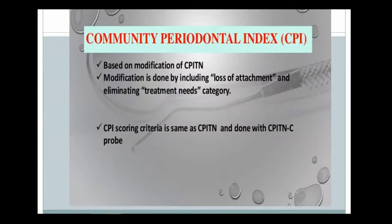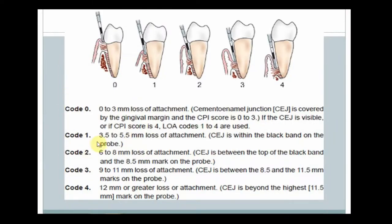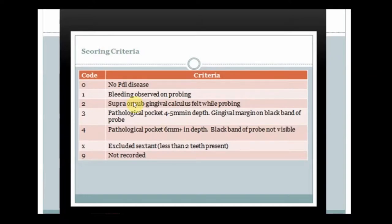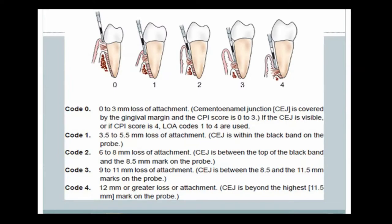For the CPI loss of attachment codes, everything else — procedure, index teeth, replacements — remains the same as CPITN, but instead of treatment needs, loss of attachment is recorded. Loss of attachment is measured from the CEJ to the bottom of the sulcus, whereas CPI codes measure from the gingival margin to the bottom of the sulcus. Code 0 is loss of attachment of 0–3 mm, where the CEJ is covered by the gingival margin.